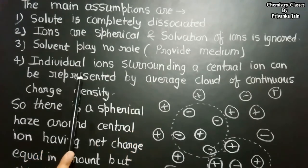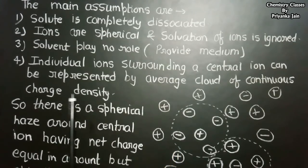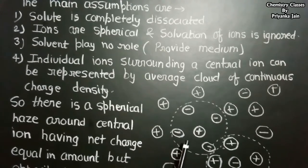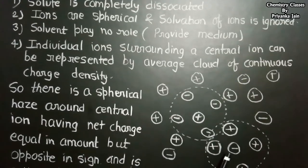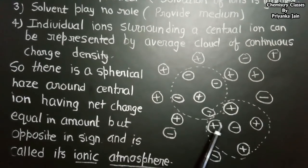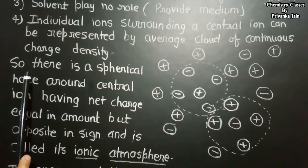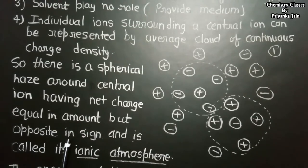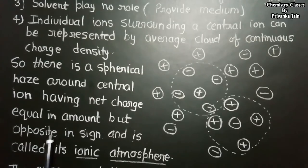The fourth assumption is that the individual ions surrounding a central ion can be represented by an average cloud of continuous charge density. So if we consider a cation, the negative charge is present as a cloud near this cation; if we consider an anion, the positive charge is present as a cloud near it. There is a spherical halo around the central ion having net charge equal in amount but opposite in sign.